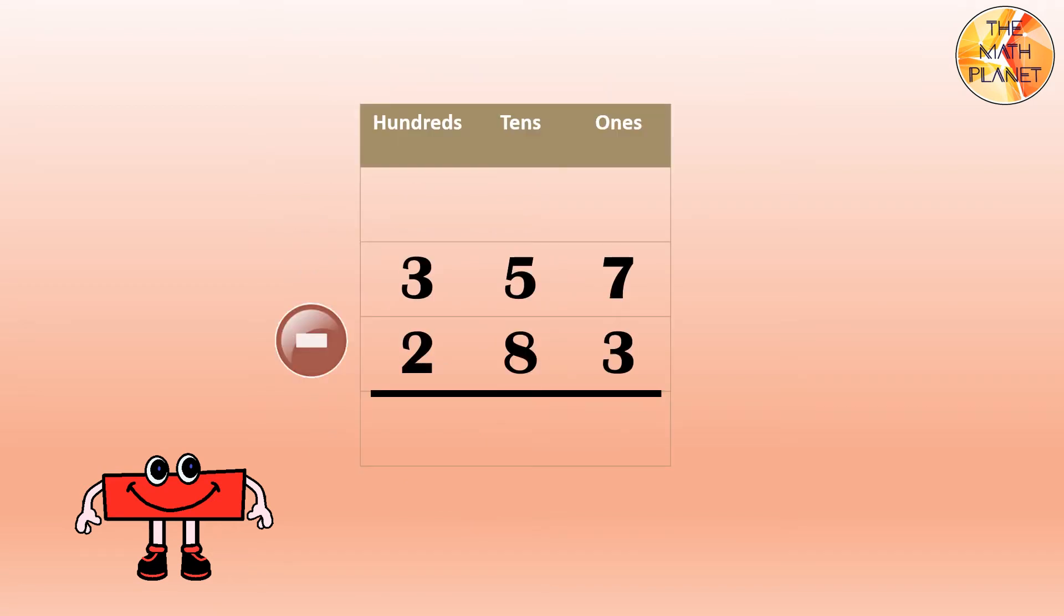Let's solve 357 minus 283. Start subtraction at the ones column. 7 minus 3. Which rule is this? This is rule number 1. More on top, no need to stop. Take away 3 from 7 and the difference is 4.